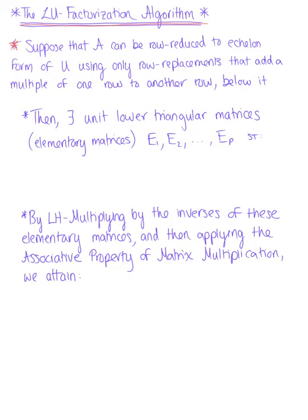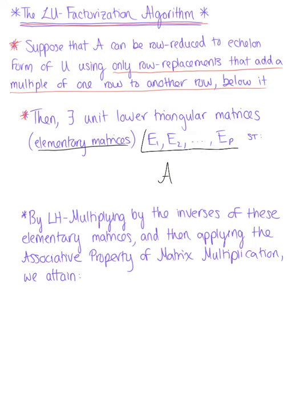We suppose that matrix A can be row reduced to echelon form U using only row replacements that add a multiple of one row to another row below it. Then there exist unit lower triangular matrices — our elementary matrices — E1, E2, all the way up to E sub P, such that by performing this sequence of elementary row operations on A, we can attain U. Starting with A, we apply the first elementary operation, then the second, continuing all the way to the last elementary operation, reducing to upper triangular matrix U.